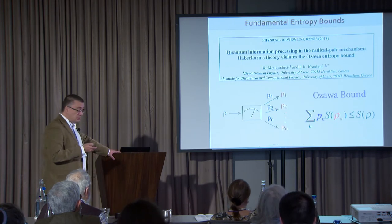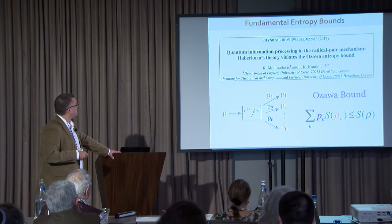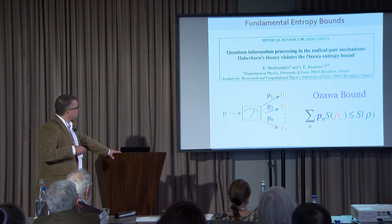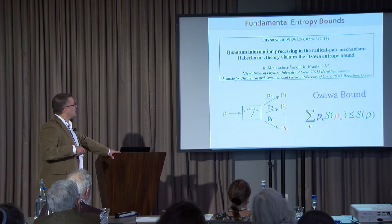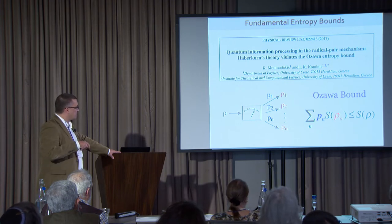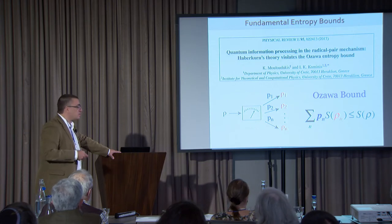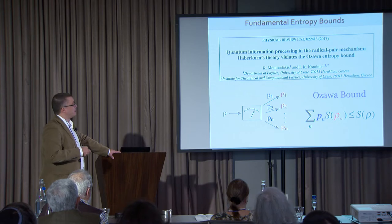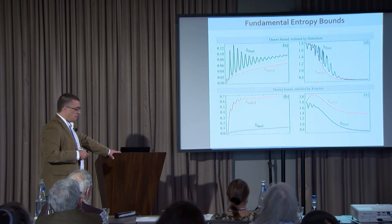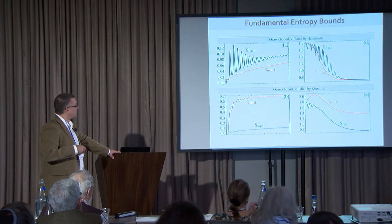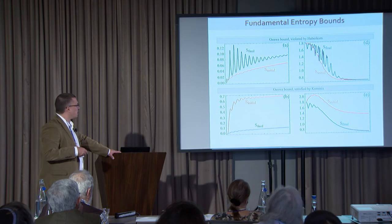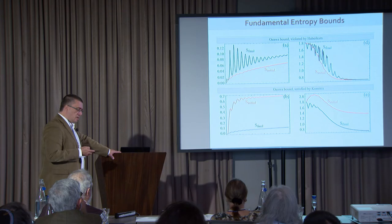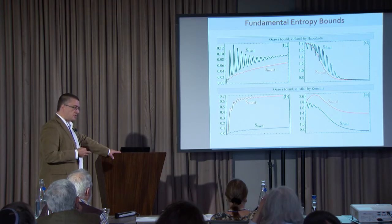A different way to show the inconsistency of the old theory at the fundamental level uses the Ozawa entropy bound. This bound states that if you have a quantum state and perform a measurement, the final entropy — given by a weighted sum of the entropies of the post-measurement states — should be smaller than the initial entropy, because measurement gives you information. We studied this for radical pair dynamics: Haberkorn's theory severely violates the bound — the black line for final entropy should be lower than the red line but is not — whereas in our case the bound is satisfied.